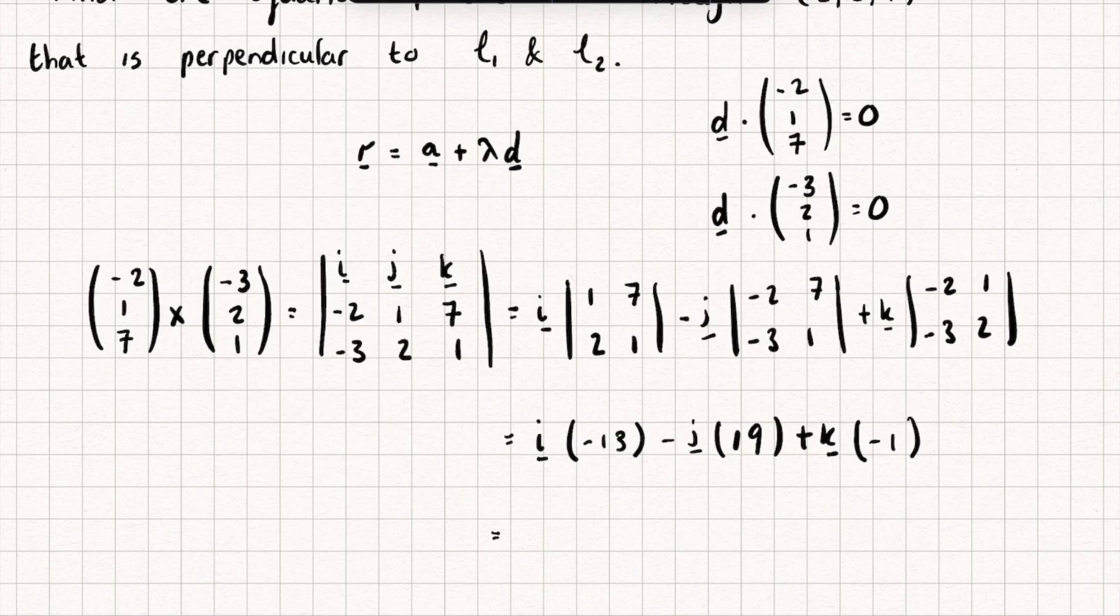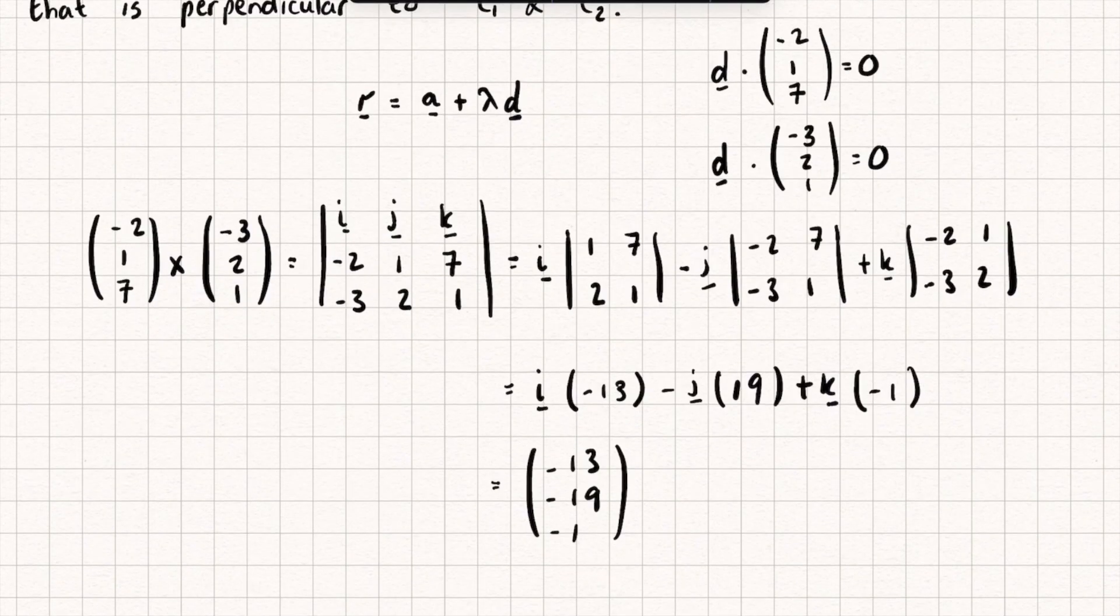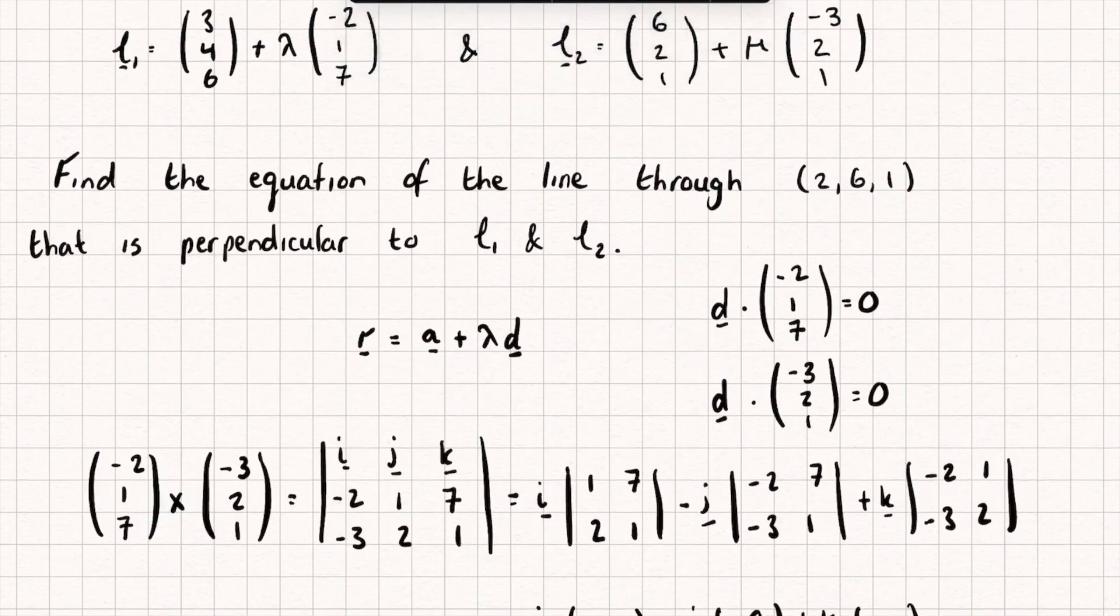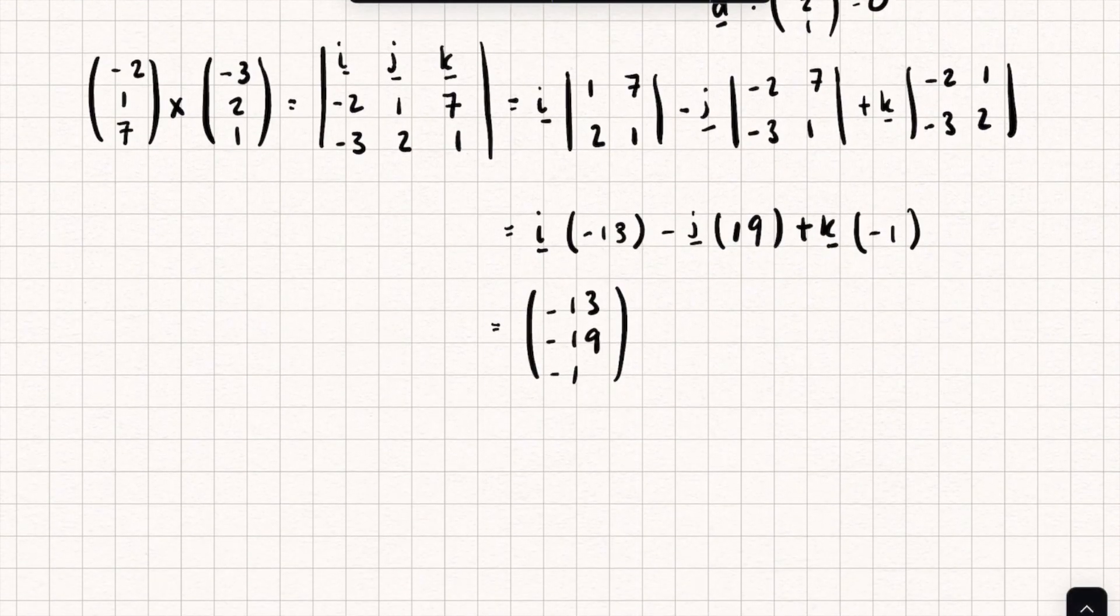So this is going to give me some vector (-13,-19,-1). And this new vector is going to be perpendicular to both the direction vector of line 1 and the direction vector of line 2.